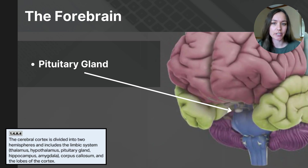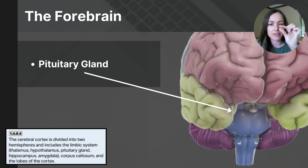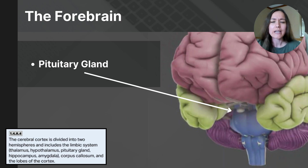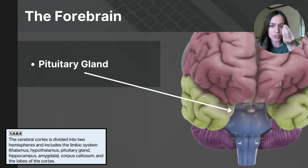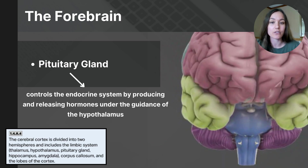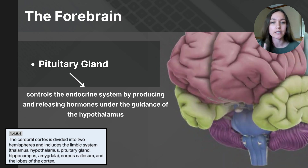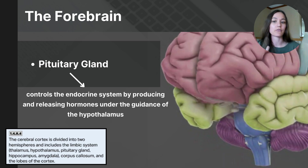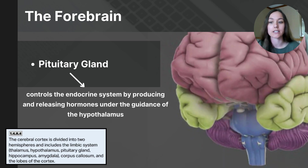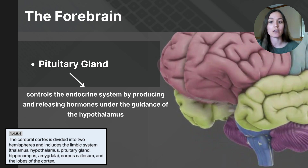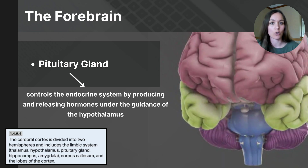The last structure is the pituitary gland — a small, pea-sized structure located just below the hypothalamus and underneath the front part of the cerebrum. It looks like a tiny round protrusion hanging down underneath the cerebrum. The pituitary gland is often called the master gland of the endocrine system because it produces and releases hormones that control other glands like the thyroid and adrenal glands. These hormones regulate functions like growth, metabolism, stress responses, and reproductive processes. The pituitary gland works closely with the hypothalamus to maintain the body's hormonal balance and overall homeostasis.